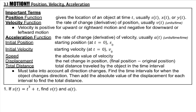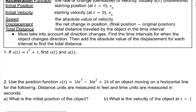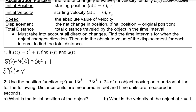For number 1, if the position function is t cubed plus t, we're going to find velocity and acceleration. Velocity is the derivative of position, so 3t squared plus 1. Then the derivative of velocity is acceleration, and that would be 6t.